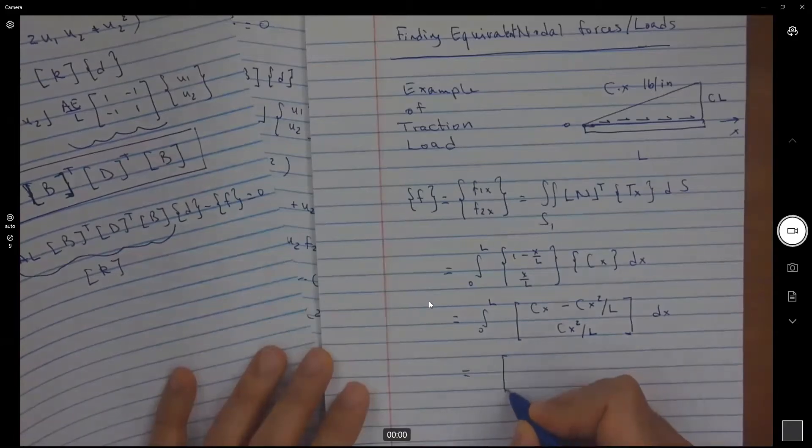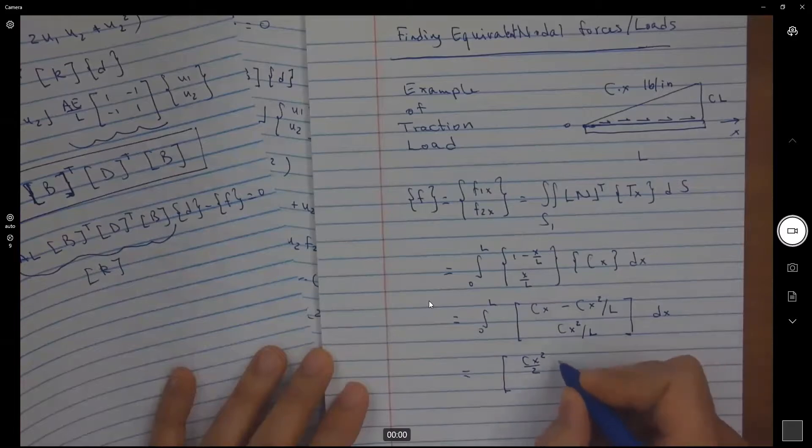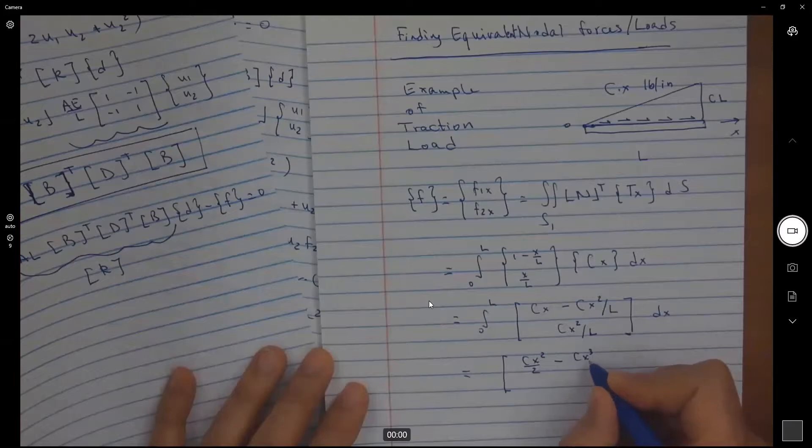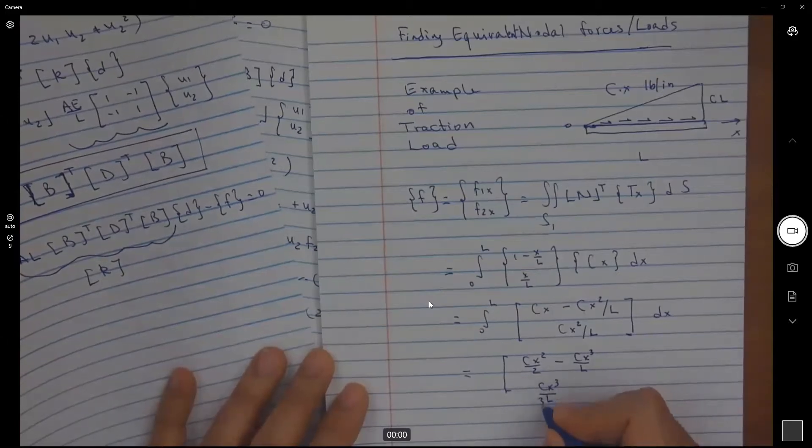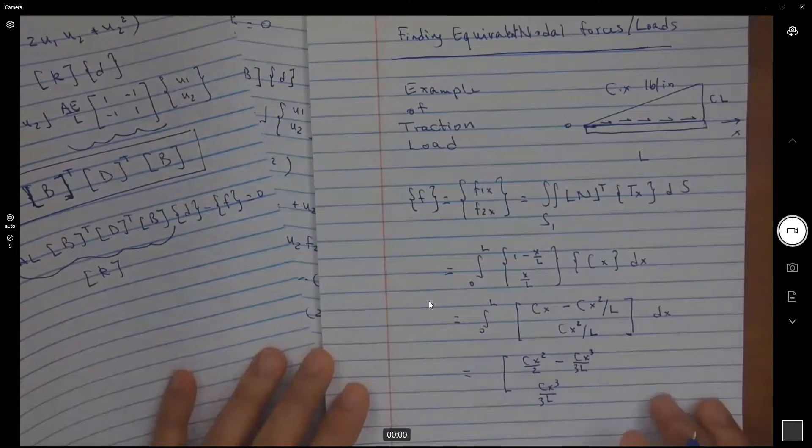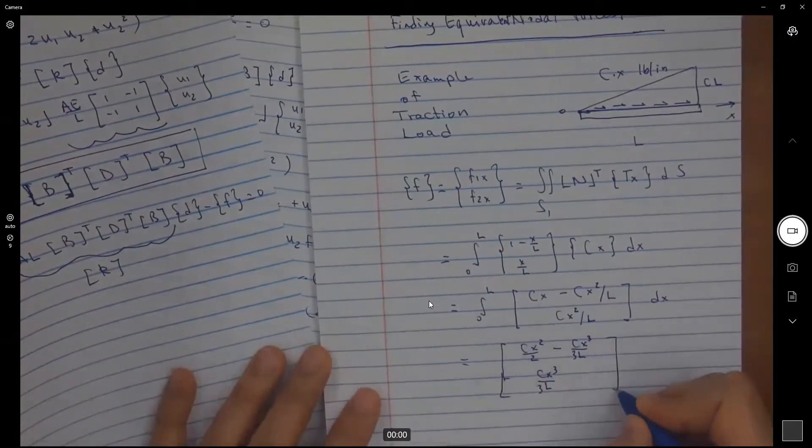So I'm going to integrate. I'm going to get cx squared over 2 minus cx cubed over L. And down here I'm going to get cx cubed over L, 3L actually. This is going to be going from 0 to L.